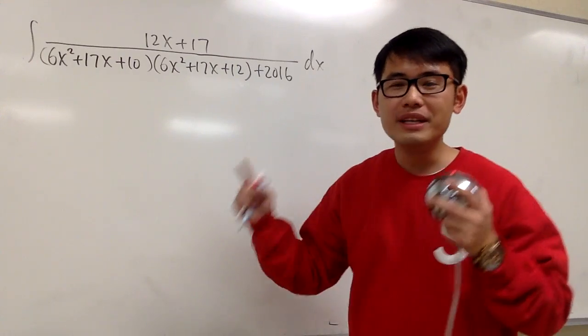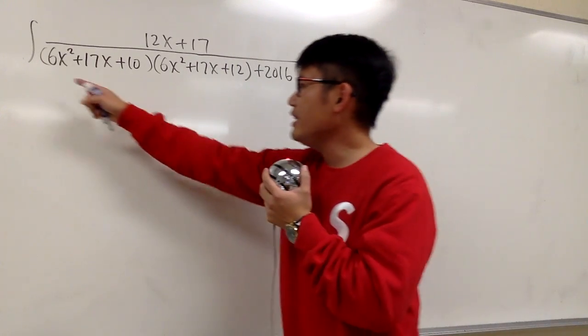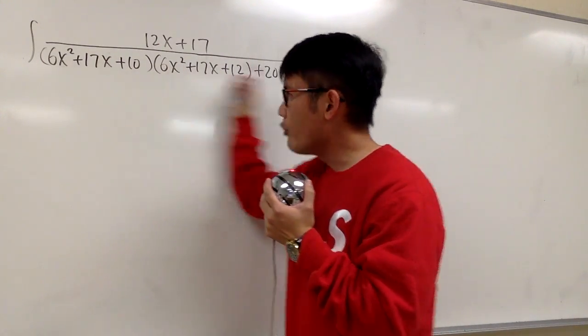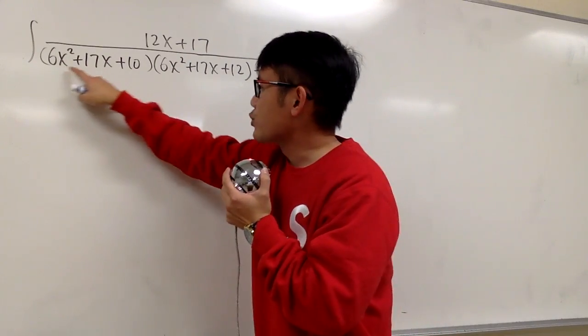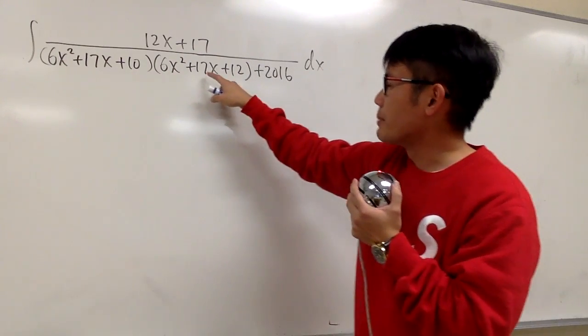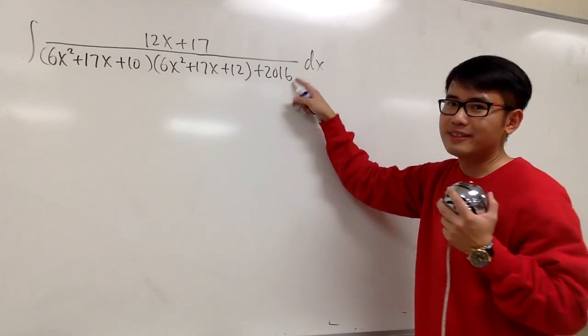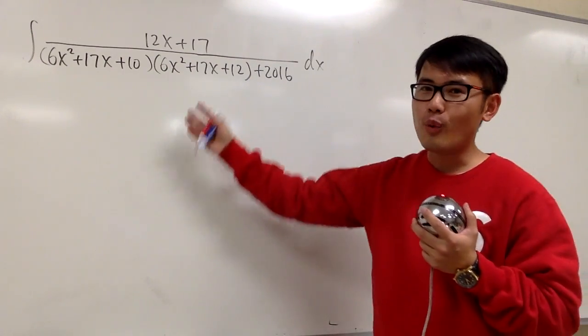Let's do some math for fun, and this integral is for Professor Churchill. Here we have the integral of 12x plus 17 over 6x squared plus 17x plus 10 times 6x squared plus 17x plus 12, and then plus 2016. It's a really long one, huh?